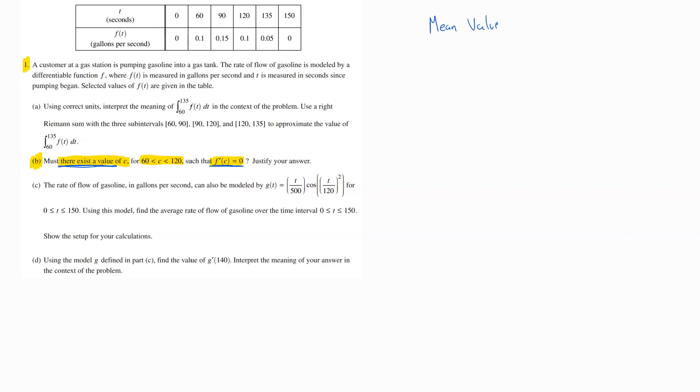The mean value theorem says that if you've got a function, we'll call it f of x is continuous on a closed interval from A to B, that's the first thing it has to be. And also if f of x is differentiable on the open interval from A to B. So those two things have to be true.